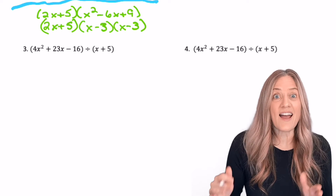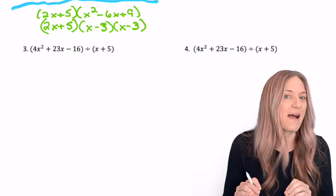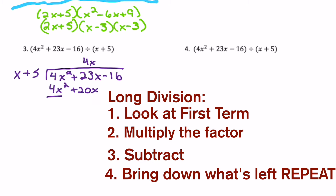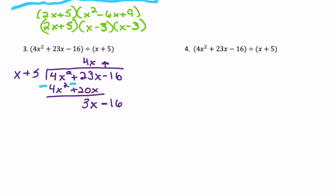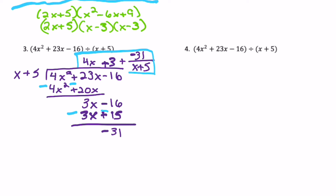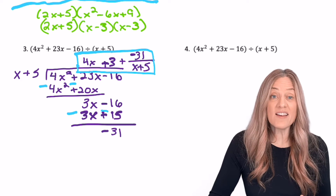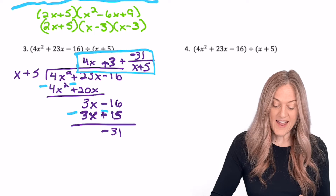Number 3 — go ahead, I think you've got this. The answer is 4x plus 3 plus negative 31 divided by x plus 5.